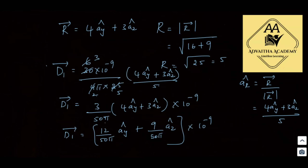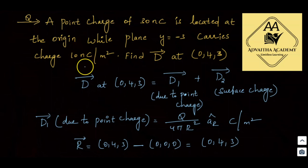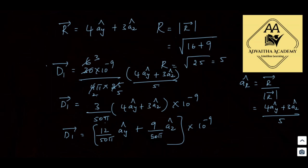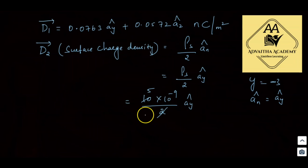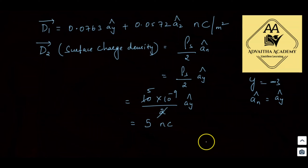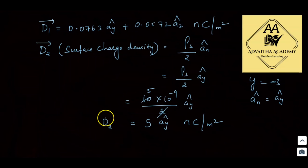So D̄₂ = ρₛ/2 × aŷ. The surface charge density ρₛ = 10 nanocoulombs per meter square = 10 × 10⁻⁹. Therefore D̄₂ = (10 × 10⁻⁹)/2 × aŷ = 5 aŷ nanocoulombs per meter square.